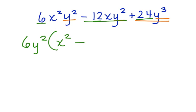We're left with negative 2x. Take it out of the third term. We're left with plus 4y. 6y squared times the quantity x squared minus 2x plus 4y.